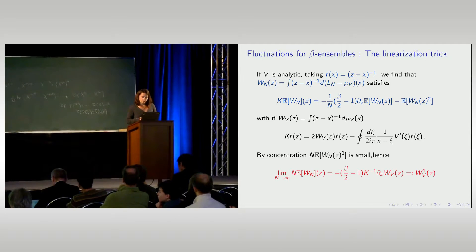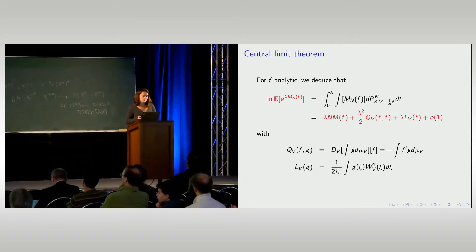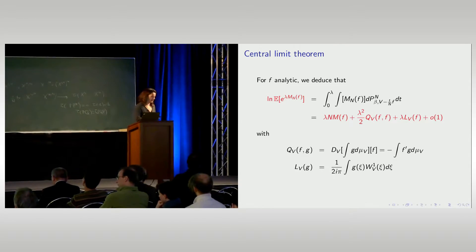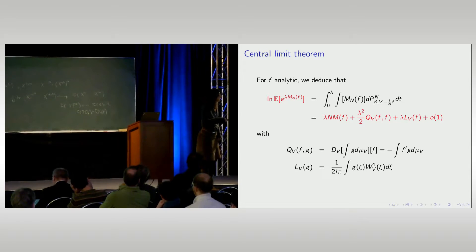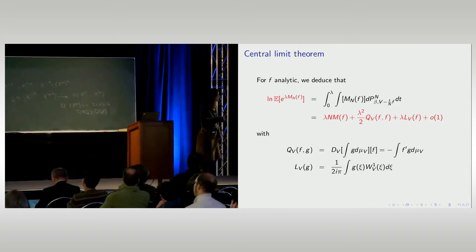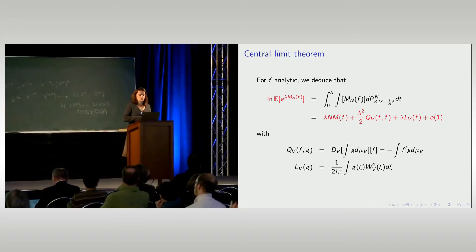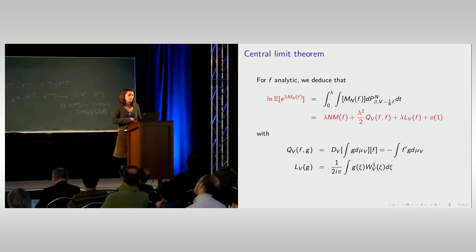Once you have this first-order correction, you conclude that you get Gaussian fluctuations: the log of the Laplace transform is given by an integral involving the function modified by the potential V. Applying the same strategy yields a quadratic term — exactly the signature of a Gaussian law.